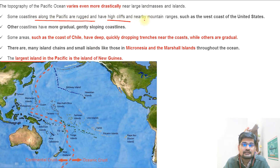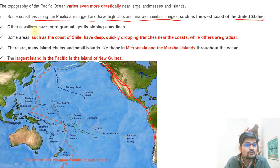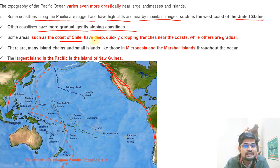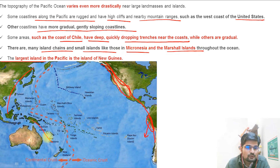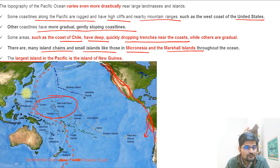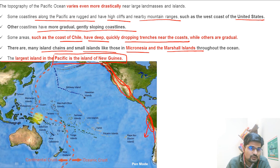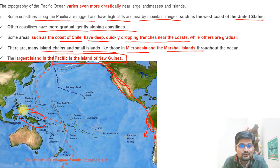Some coastlines along the Pacific are rugged with high cliffs and nearby mountain ranges, such as the west coast of the United States. Other coastlines have more gradual, gently sloping coastlines. Some areas, such as the coast of Chile, have deep, quickly dropping trenches near the coast like the Peru-Chile Trench. There are also many island chains and small islands, such as those in Micronesia and the Marshall Islands. The largest island in the Pacific is New Guinea.